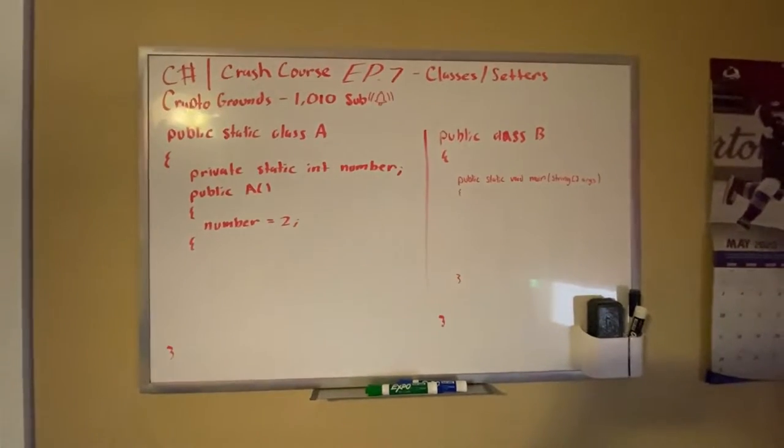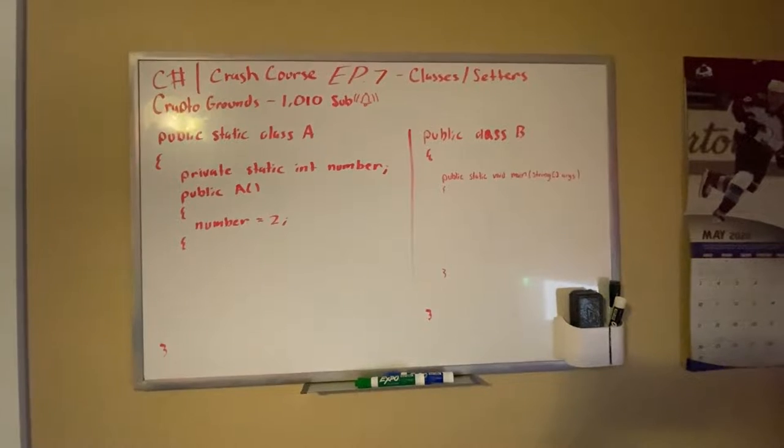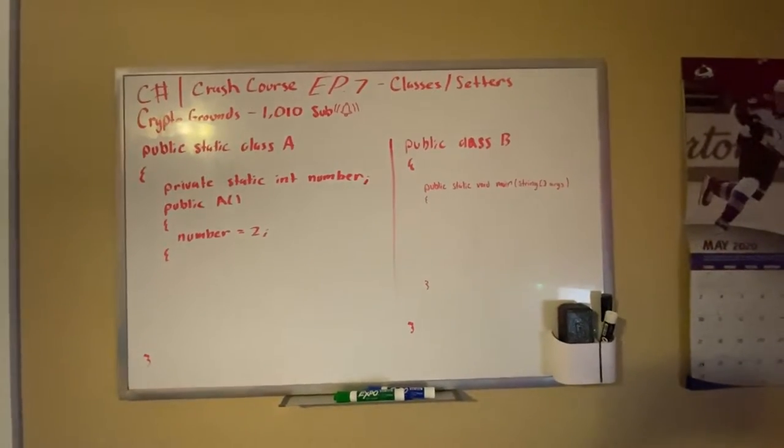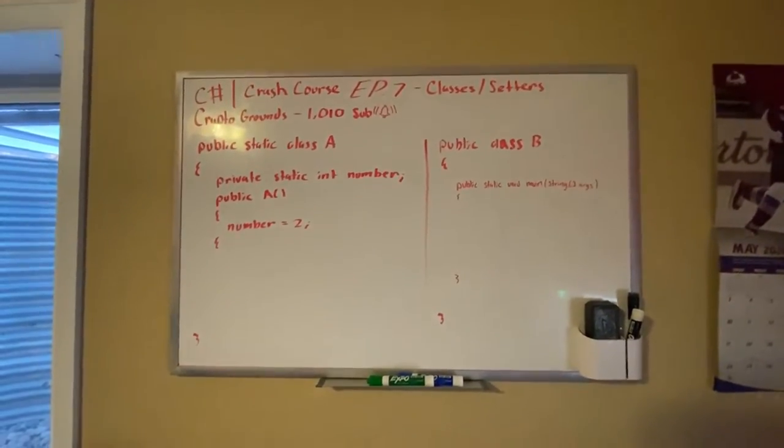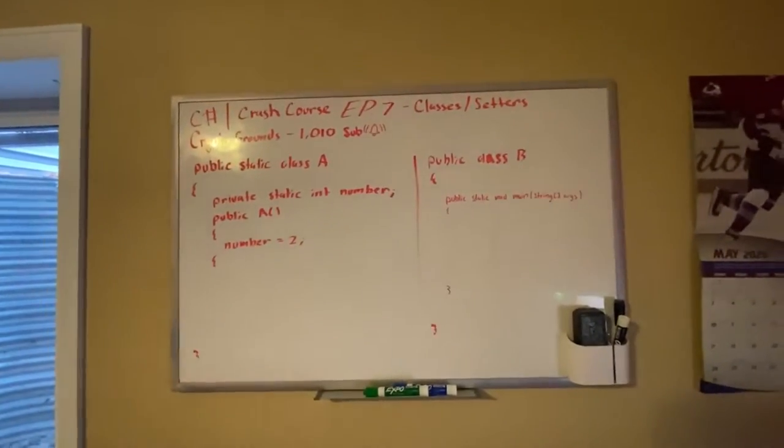Hello guys, Crypto Grounds here. Welcome back to another C# crash course video. This is episode 7 and today we're going to be talking about classes and setters. Basically, last episode we made getter methods, now we're making setters where we can actually change the variable outside of the main class.